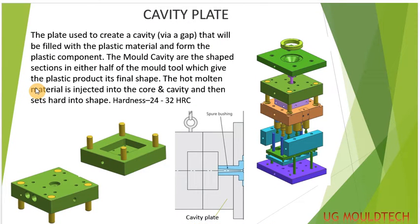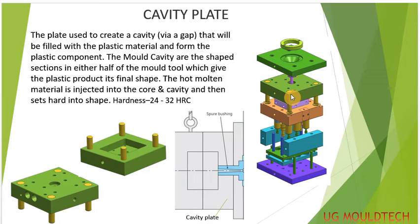The next component will be the cavity plate. The plate is used to create a cavity — a gap that will be filled with plastic material to form the plastic component. The final component will form in the cavity. The cavity plate is the shaped section of either half of the mold tool which gives the plastic its final shape. The whole material will be injected into the core and cavity and set to harden to the shape. The hardness will be around 24 to 32 HRC, and we also use core and cavity inserts with HRC of around 50 or more.